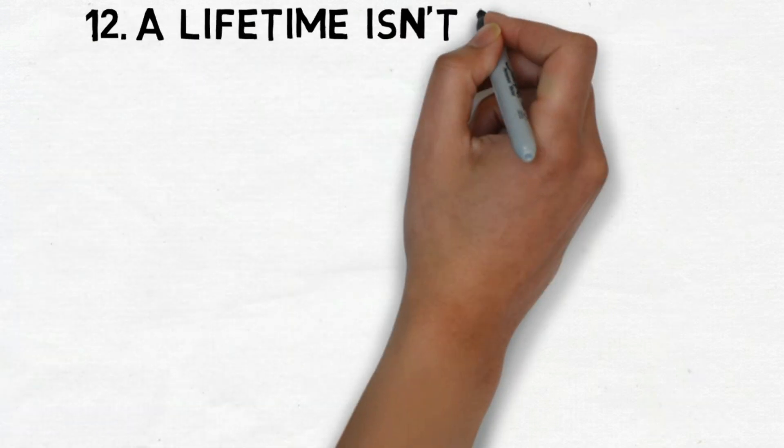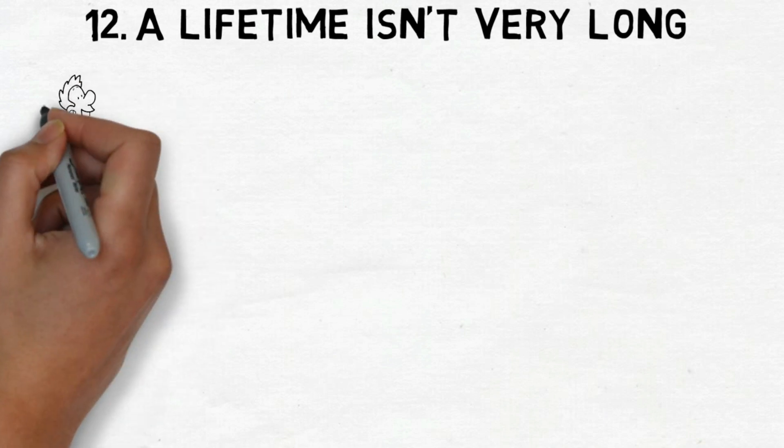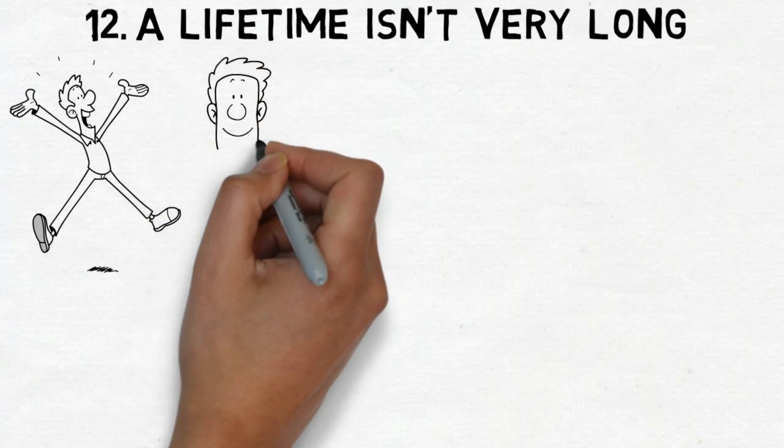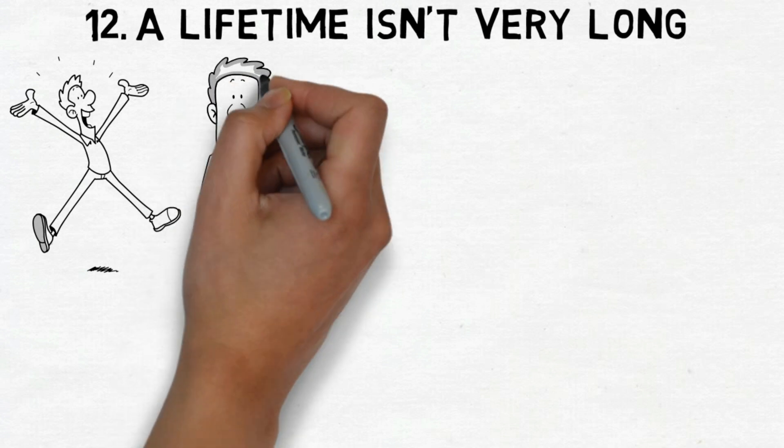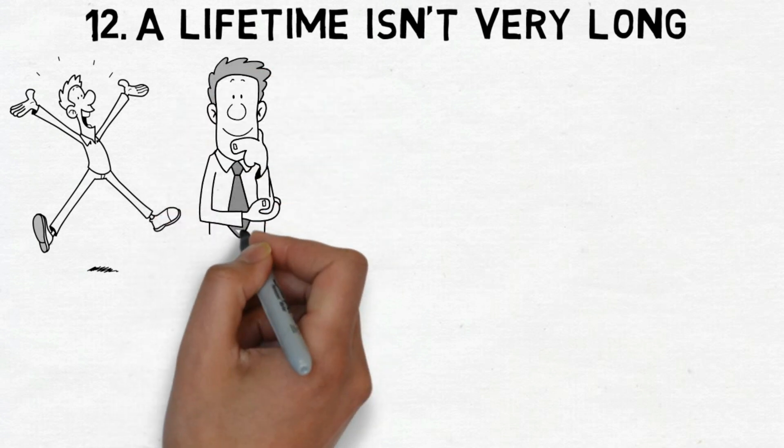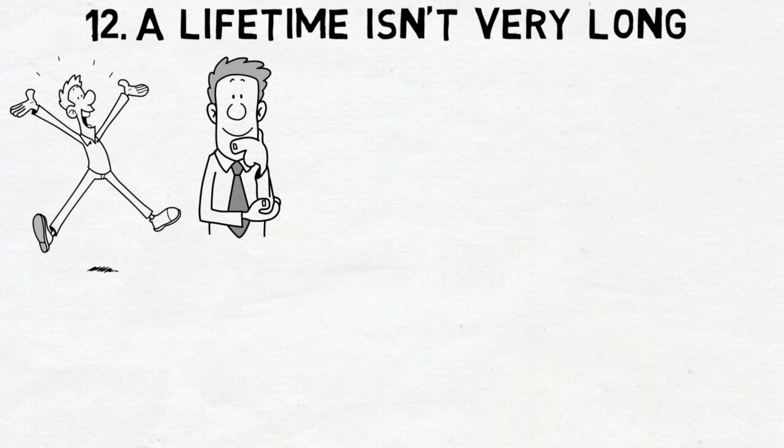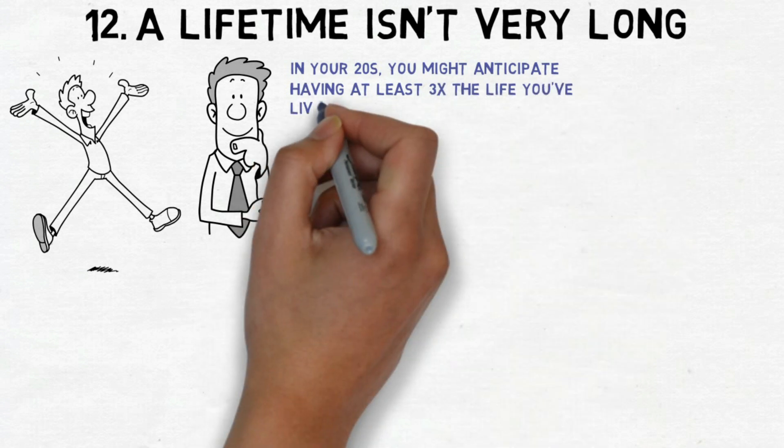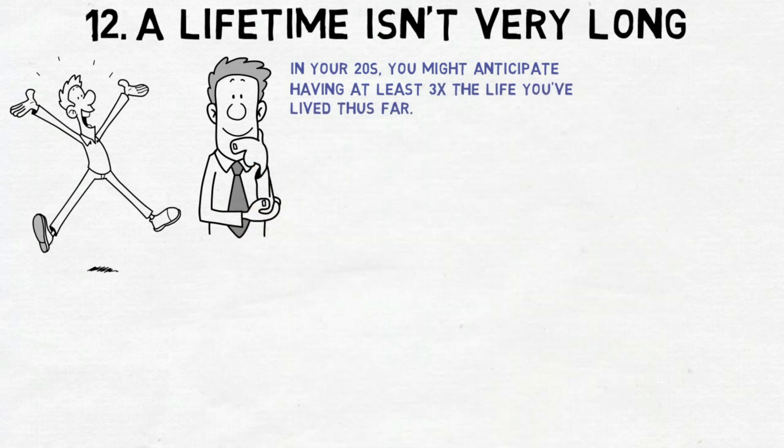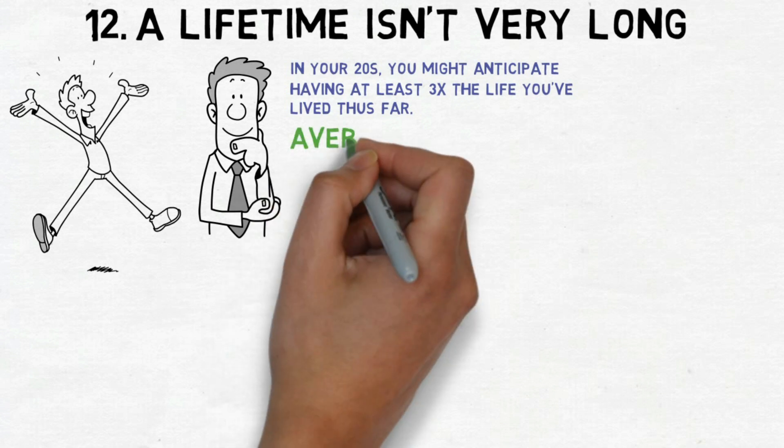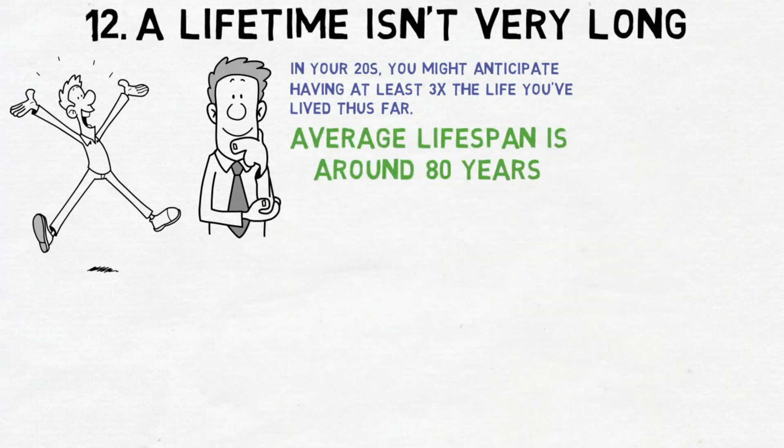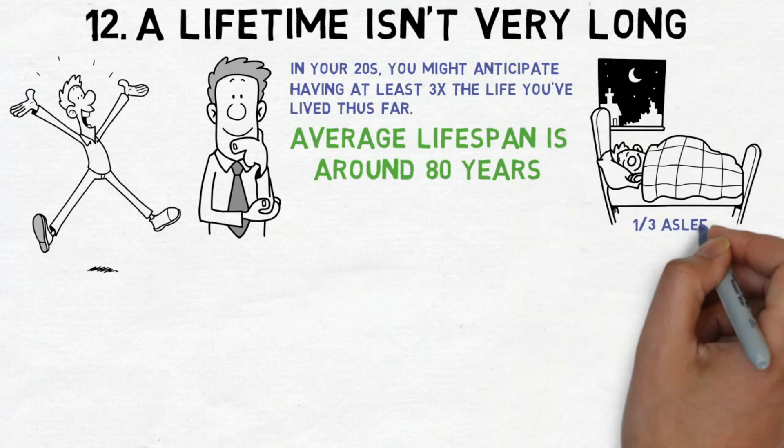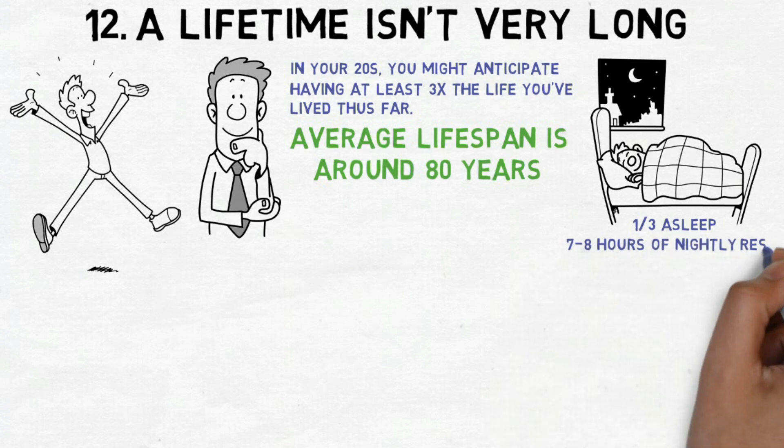And number 12. A lifetime isn't very long. This isn't usually a big thought when you're young, because it seems like it goes on forever. Feeling like there's a lot of life left comes from comparing the part of life we've already had with what we think is still to come. Let's embark on a brief thought experiment, shall we? In your 20s, you might anticipate having at least 3 times the life you've lived thus far. But, there's an important exception to this view.